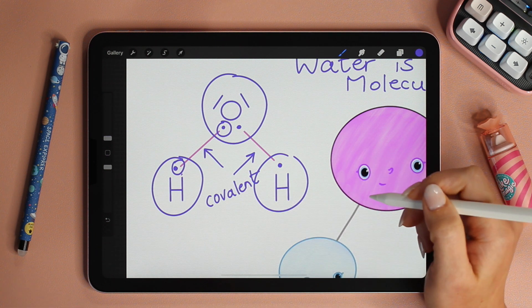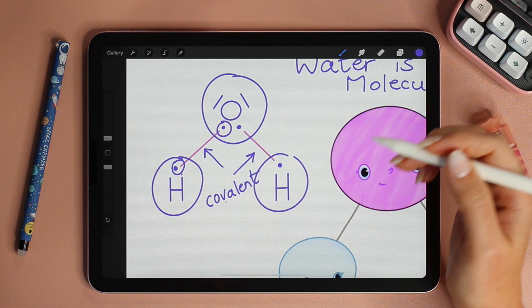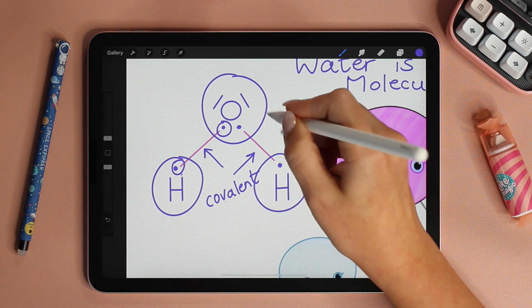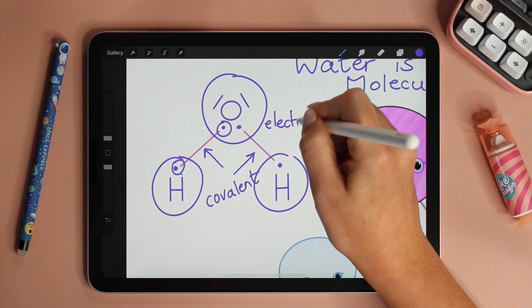But in the case of H2O and of course other polar molecules, but today we're studying about water, oxygen is more electronegative.